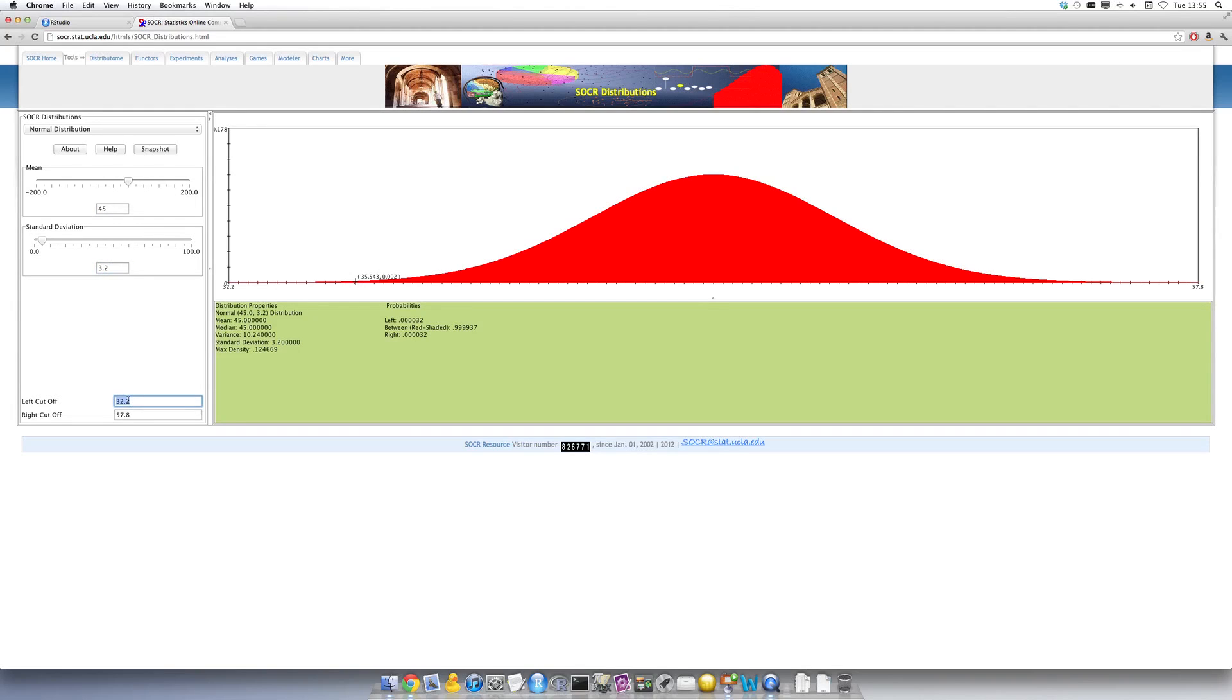And then I also want to give it a cutoff. I want the area to the right of 50. So the shaded right area is going to be 0.059.